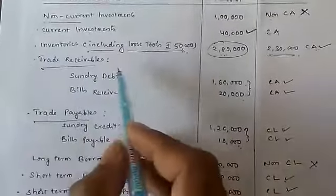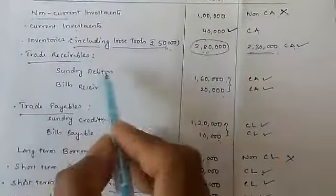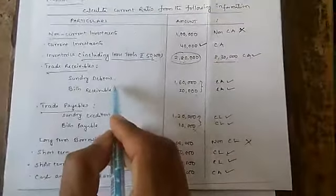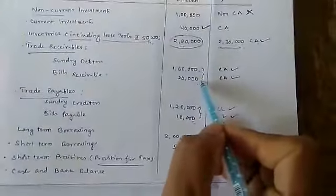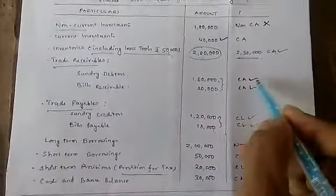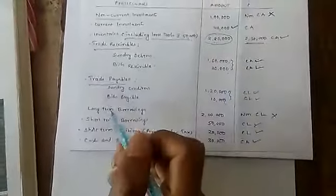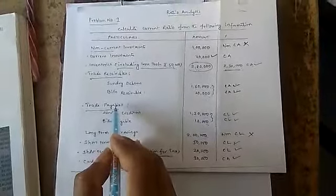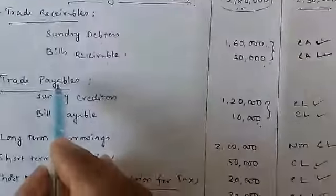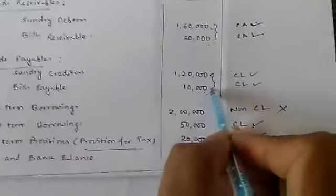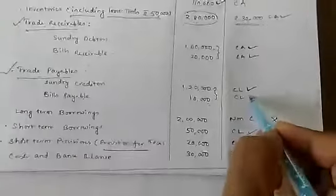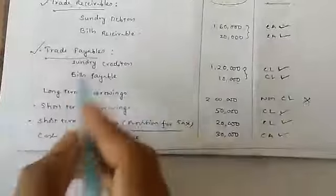Trade receivables means sundry debtors and bills receivable combined. Here, sundry debtors are ₹1,60,000 and bills receivable are ₹20,000 — both are current assets. Trade payables appear on the liabilities side under current liabilities. Trade payables are sundry creditors (₹1,20,000) and bills payable (₹10,000) — both are included in current liabilities. Long-term borrowings are next.